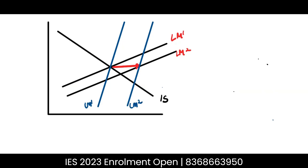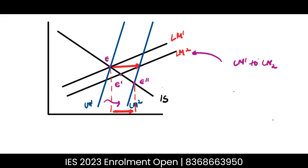If we look at the equilibrium, the initial equilibrium is where IS meets LM, which is at E. Once there is a shift from LM1 to LM2, for the flatter LM curves the equilibrium goes from E to E-dash. But for the same shift with the steeper LM curves, the new equilibrium goes from E to E-double-dash. Because the LM curve is steeper, the change in the equilibrium level of income is much greater.